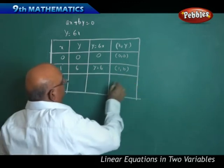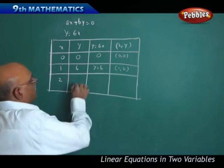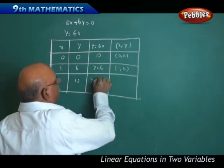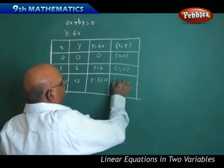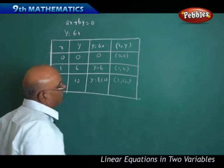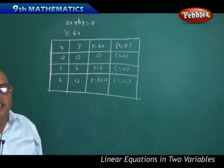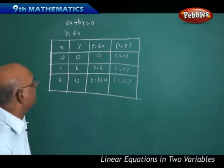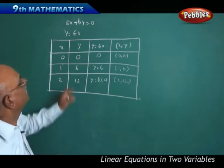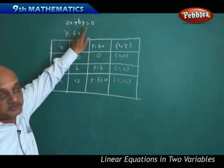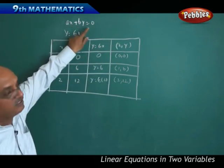In the same manner, suppose if I take x is equal to 2, naturally y will be 12, that is y is equal to 6 into 2. So that pair is going to be 2 comma 12. Like that, I can find out as many solutions as possible. But where is the variation occurring graphically with regard to Ax plus By plus C equal to 0 as well as Ax plus By equal to 0?